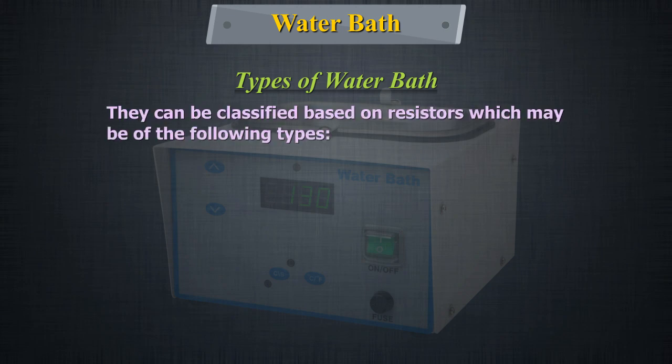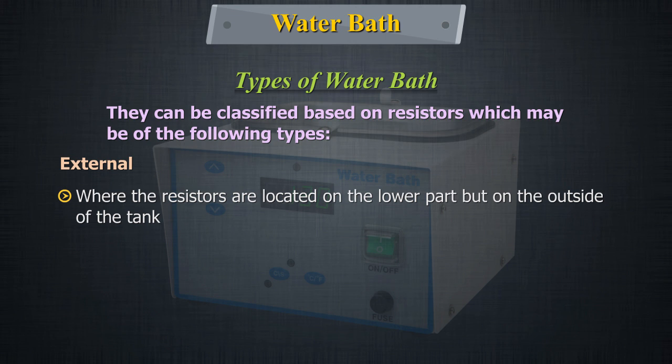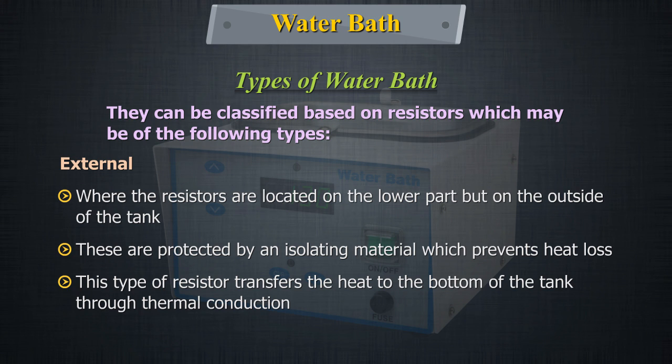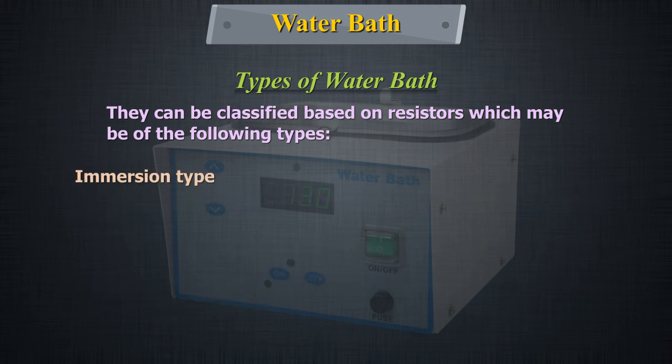Water baths can be classified based on resistors, which may be of the following types. In one type, the resistors are located on the lower part but on the outside of the tank. These are protected by an isolating material which prevents heat loss. This type of resistor transfers heat to the bottom of the tank through thermal conduction.